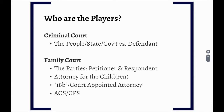Next, we have attorneys for the children, or AFCs. If children are involved in a family court proceeding, the court may assign an attorney to represent the child's interests. When it comes to orders of protection, an AFC will typically only be assigned if the order is on behalf of a child. Family court matters are determined by a judge or a referee. The role of a referee and judge are essentially the same when it comes to orders of protection — they issue orders and make determinations based on the facts presented. The main difference is that when appearing before a referee, the parties will be asked to consent to the referee's authority to hear and determine the case. Once consent is obtained, referee orders function in the same way as judge-made orders.